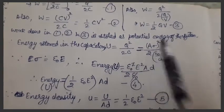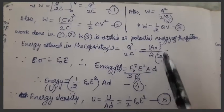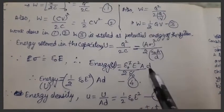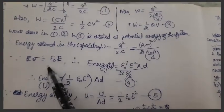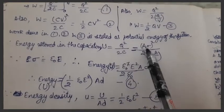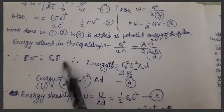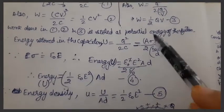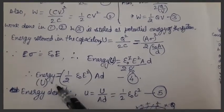Now q can also be written as sigma A, and c can be written as epsilon naught A by d. We have already studied these expressions in earlier classes. On solving and putting sigma equal to epsilon E, which is another relation we are using, we get another form: half epsilon E square into A d.